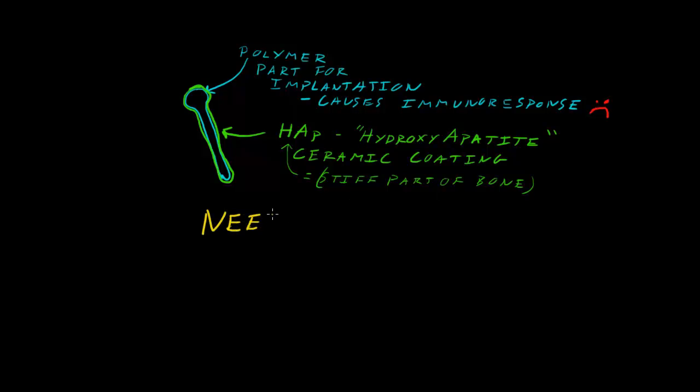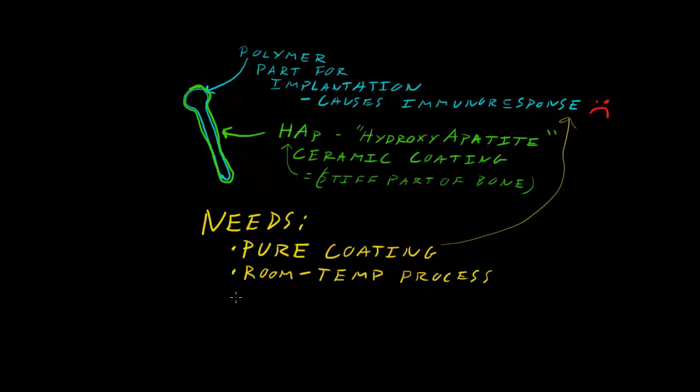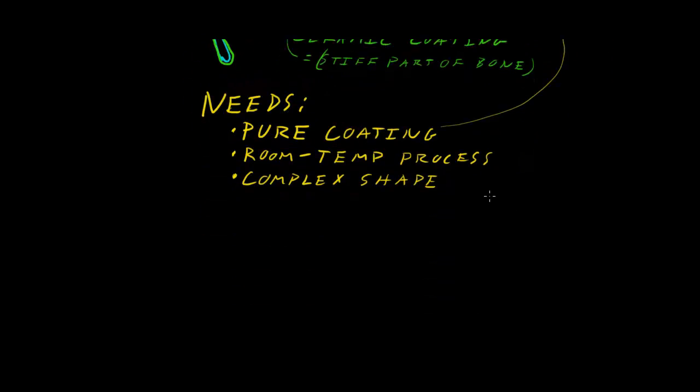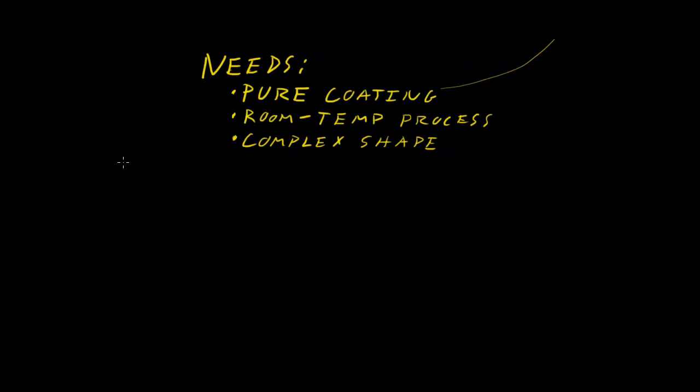Now, in order to make this work, we have some specific needs. It needs to be pure. It needs to be a pure coating of hydroxyapatite. You can't have impurities, because those will cause another immune response, and that causes general pain and unhappiness. In addition to being pure, it has to be made at room temperature, or at least low temperature, because otherwise that polymer is going to melt. Last, the process you're going to use to coat this hydroxyapatite needs to be able to conform to a complex shape.